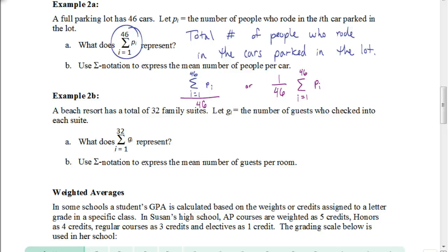Okay, so let's see how you did. So in this particular example, it's looking at a beach resort as a total of 32 family suites. Let G sub I be the total number of guests who checked into each suite. So what does this represent? Well, this represents the total number of guests that checked into the resort. Just to rephrase it, it's similar to that. This is the, or you could just say it's a total number of guests.